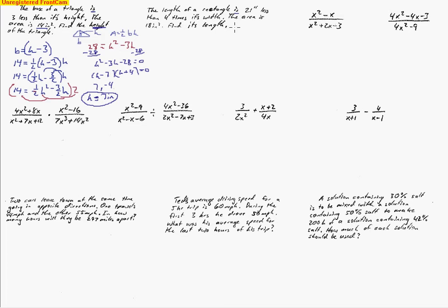We'll write an expression in place of the length — 'is' means equals — so L equals 4 times the width minus 21. The area is 18. So in the formula, area equals length times width, we write 18 in place of A and use the expression 4w minus 21 for the length, then multiply by the width.